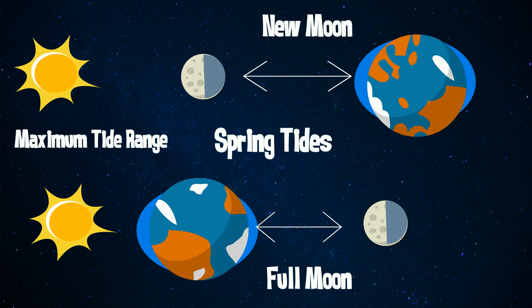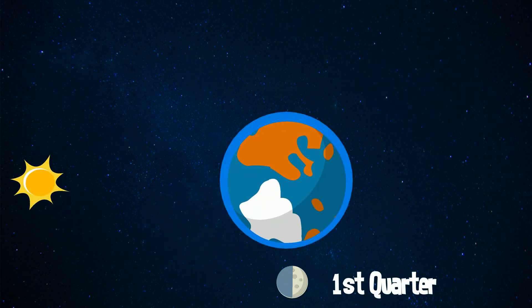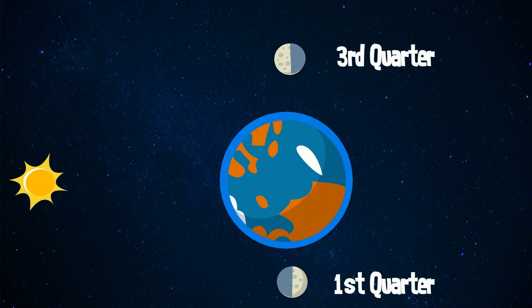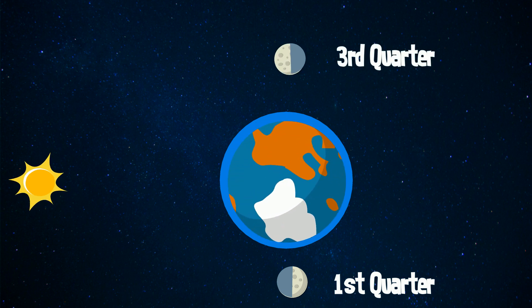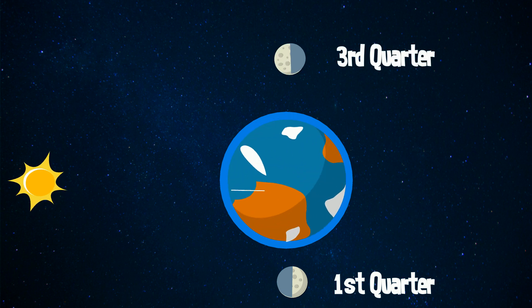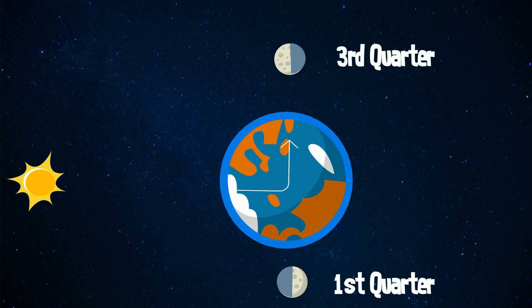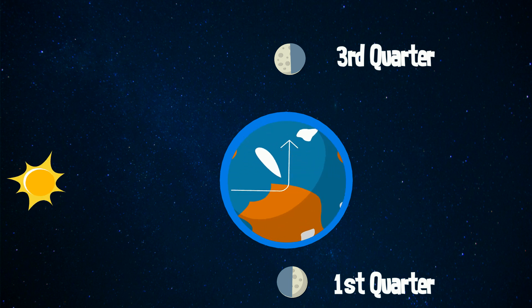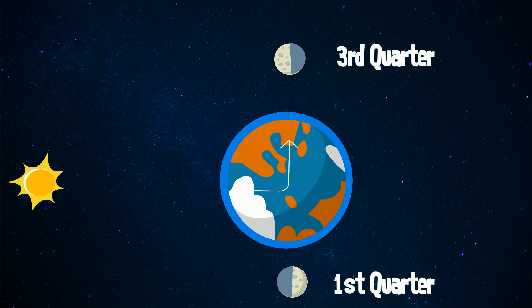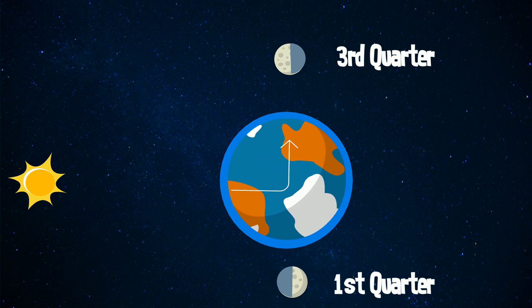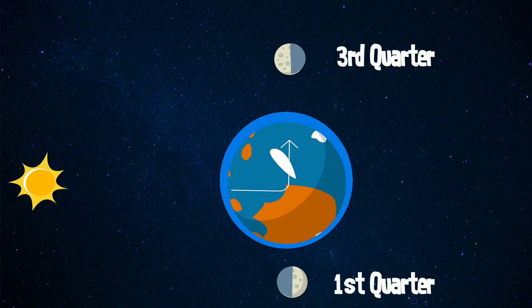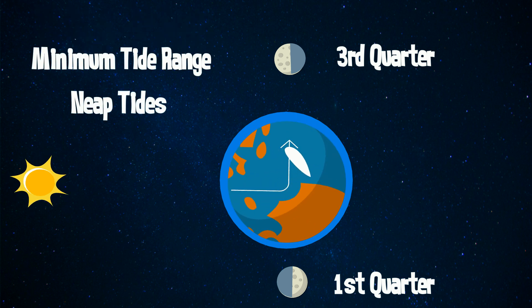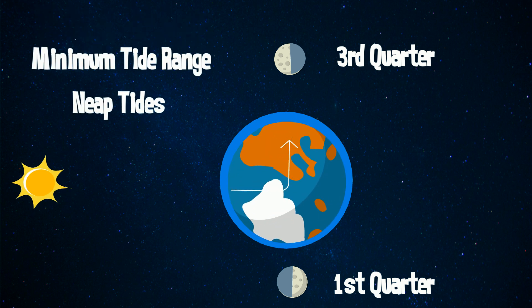When the moon is at first quarter or third quarter, the sun and moon are separated by 90 degrees and the solar tidal force cancels the moon's tidal force, and the tidal range is at its minimum. These tides are called neap tides.